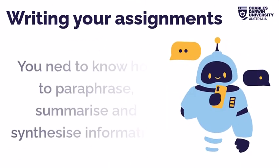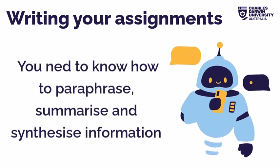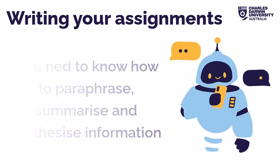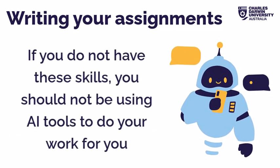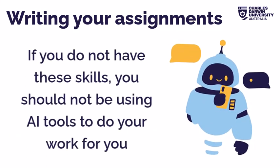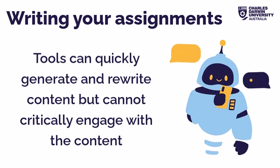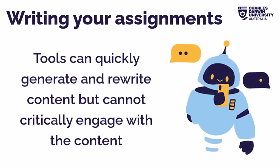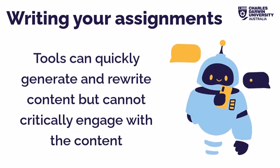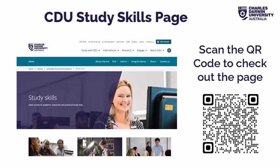Moving away from research and planning, once you begin writing, you need to be able to paraphrase, summarise and synthesise information. If you do not have these skills, you should not be using AI tools to do your work for you. These tools can quickly generate and rewrite content, but they are unable to critically engage with the material in the same way a human can — in the way you should be able to. To learn more about these skills, check out the Study Skills page on summarising, paraphrasing and quoting. You can scan the QR code to go to the page now.